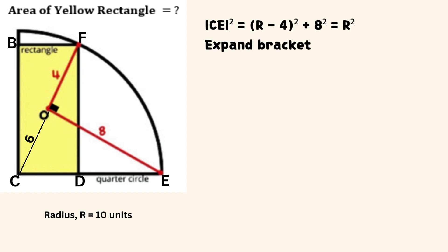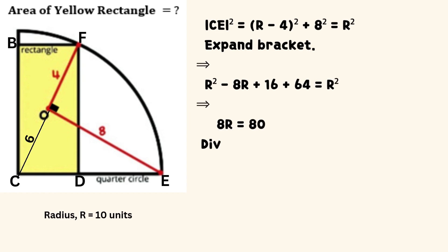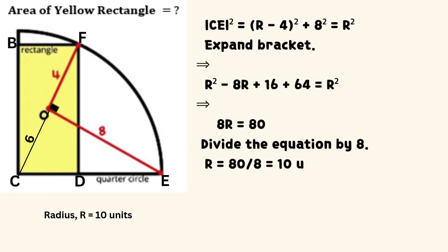Hence, the square of line CE equals the sum of the square of (R minus 4) and the square of 8, which equals the square of R. Expand the bracket. It follows that 8 times R equals 80, after substitution and simplification of values.